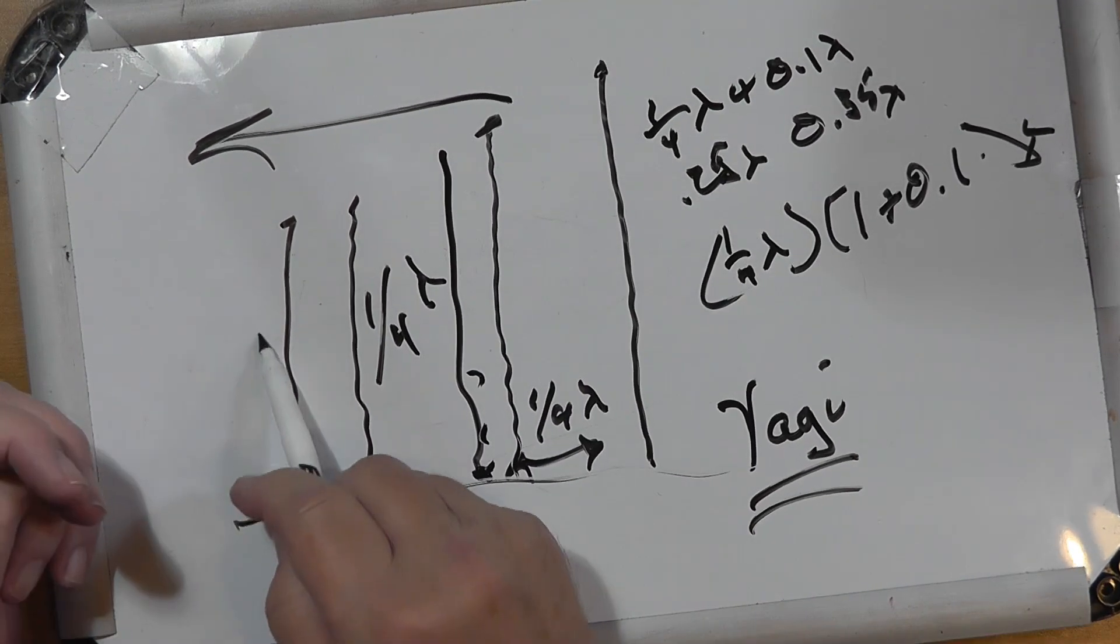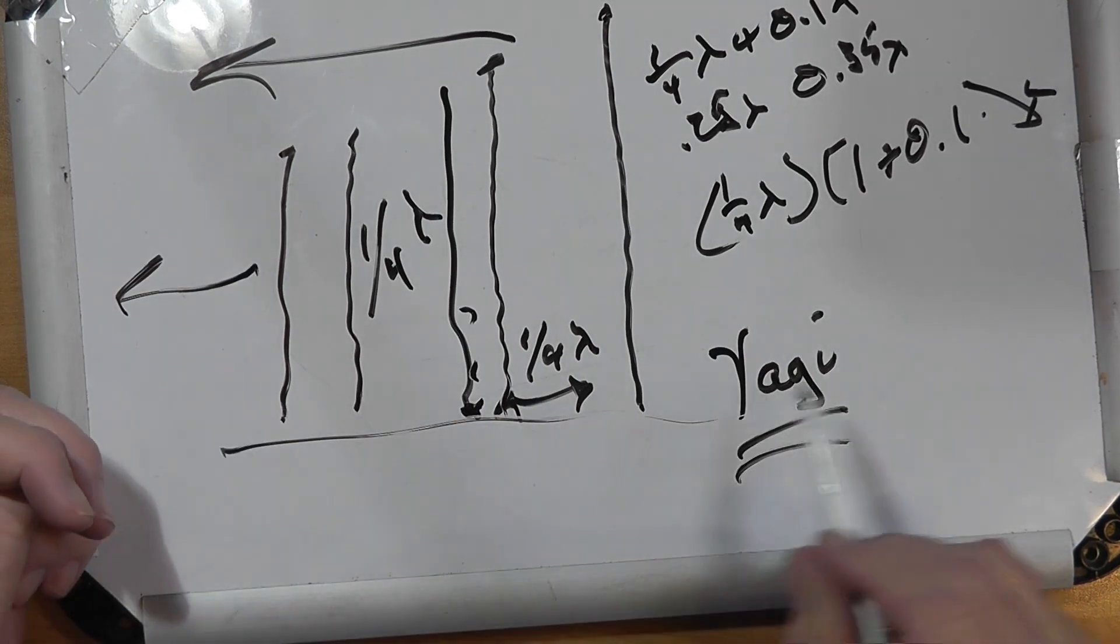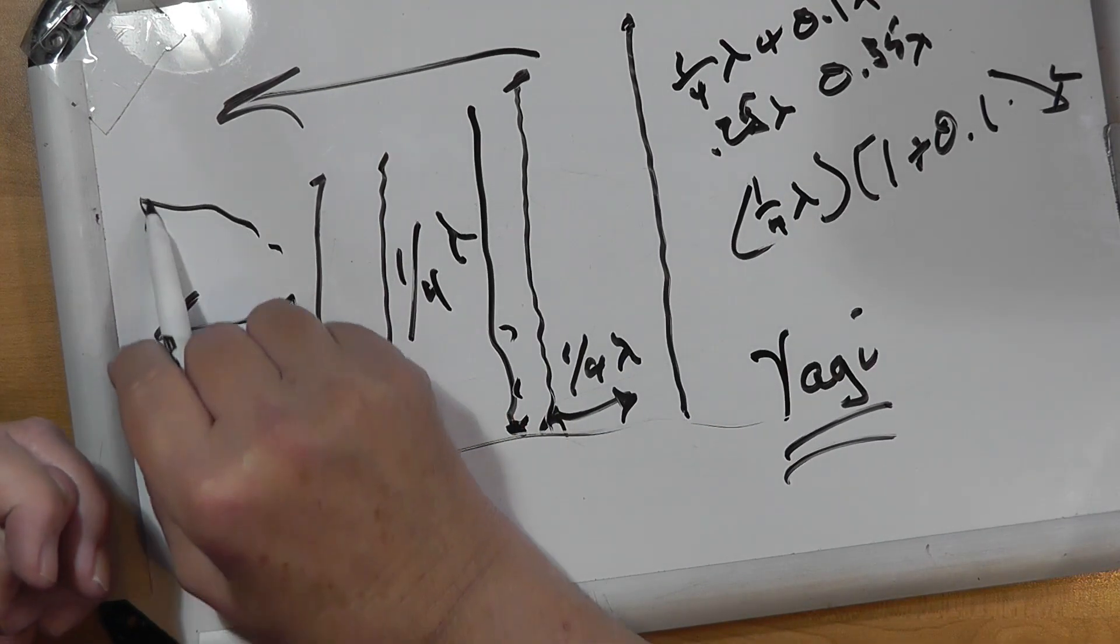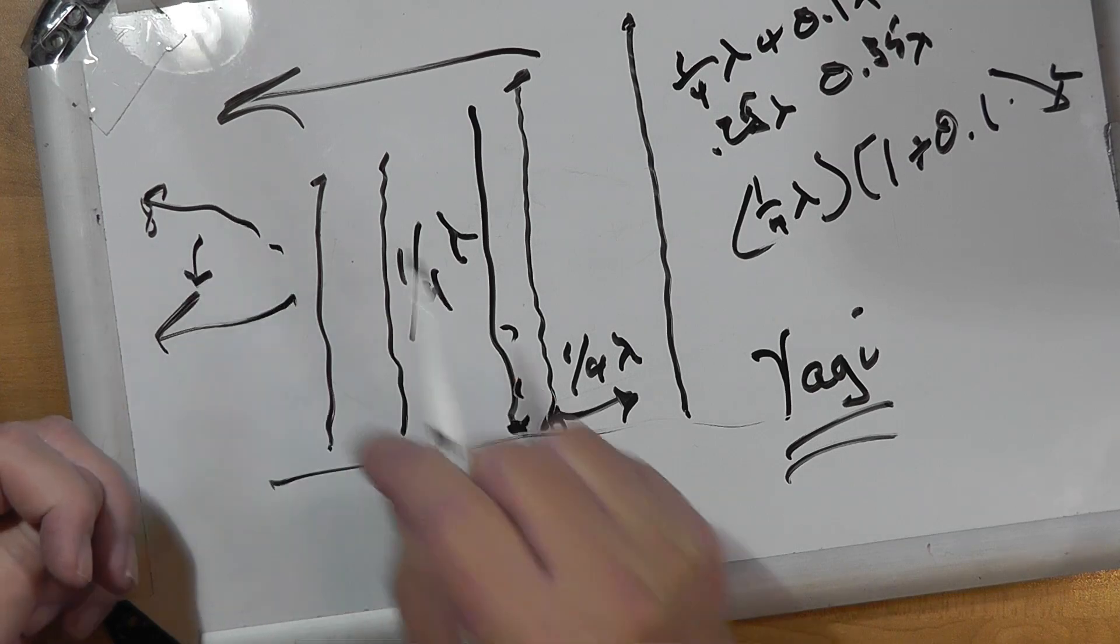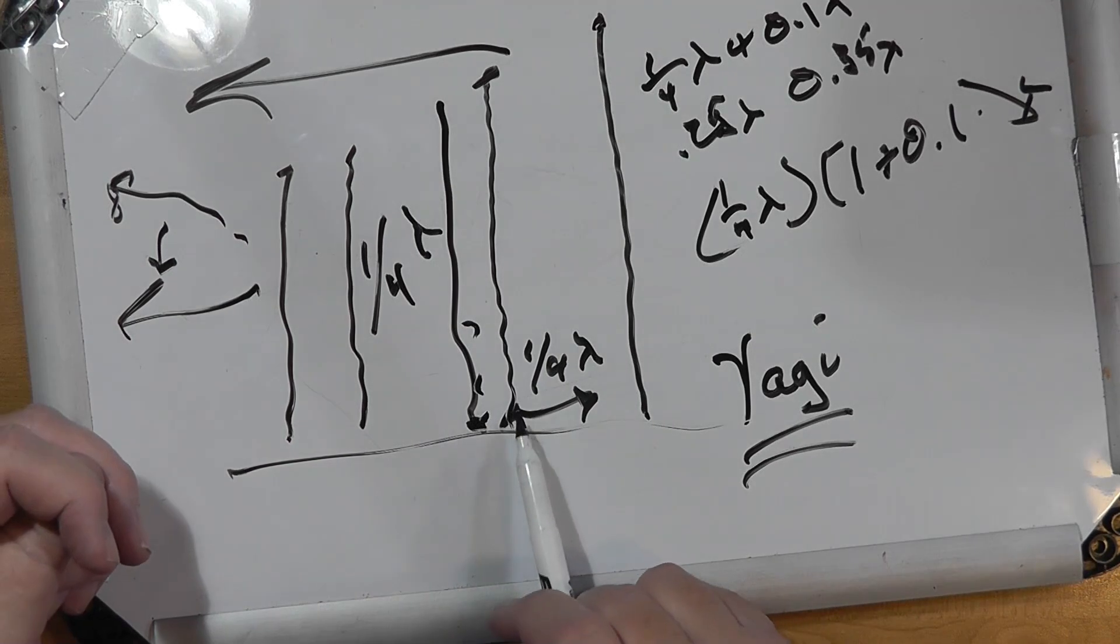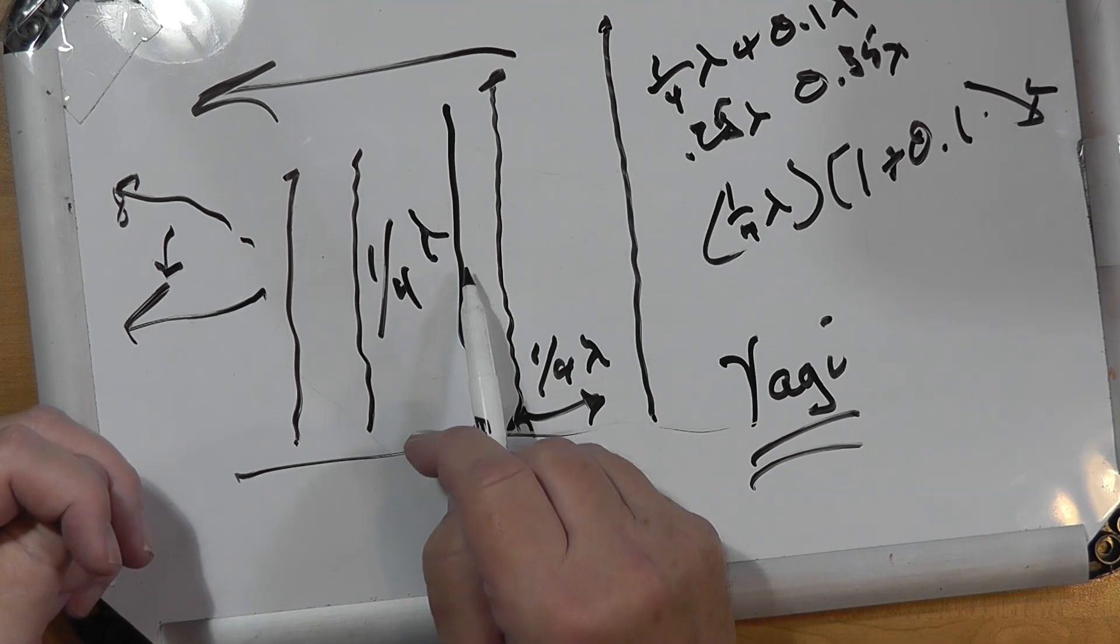And the more you aim the beam, the further it comes to the horizon - the angle right there. So look up what the length of a director should be at the frequency you intend to use it.